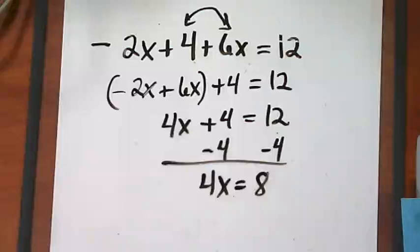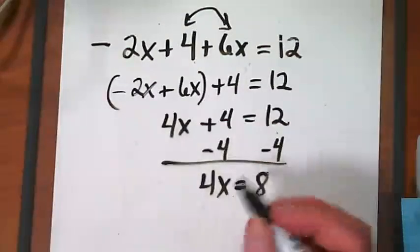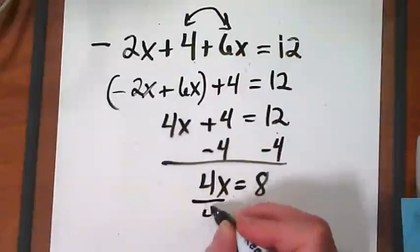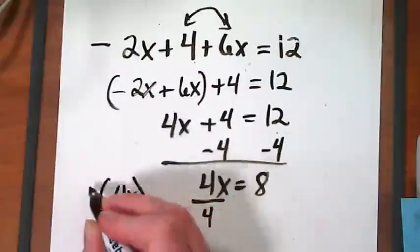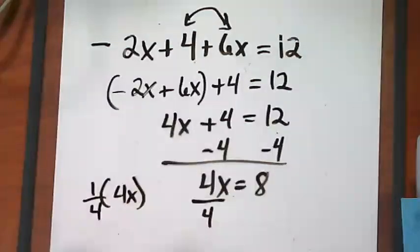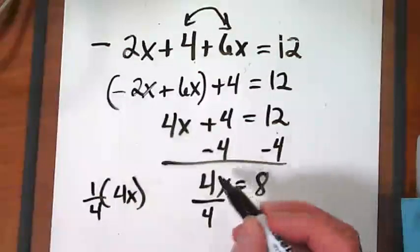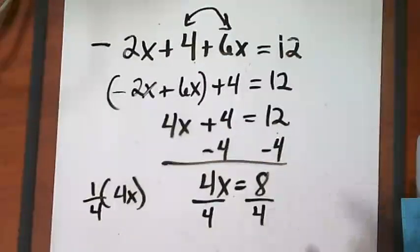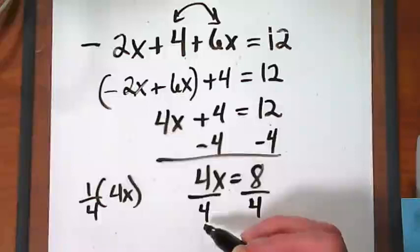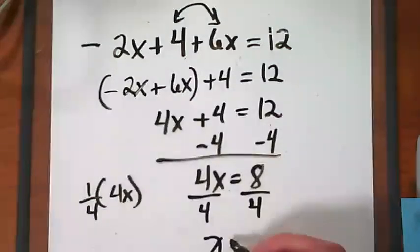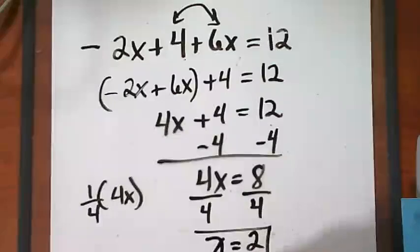4x equals 8. Now I want to get that 4 gone because it's with the x, and I want the x by itself. What am I going to do? I'm going to divide by 4, which is the same as multiplying by 1 over 4. I'm going to divide by 4 on both sides. 4 over 4 is 1, equals 2.